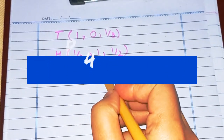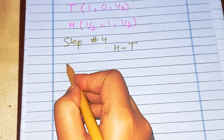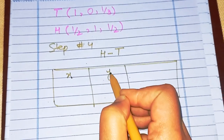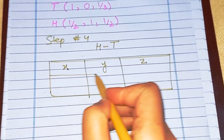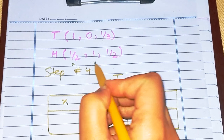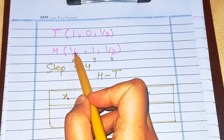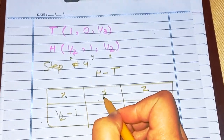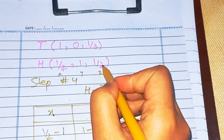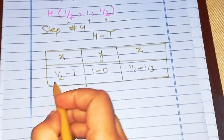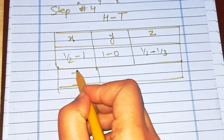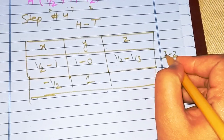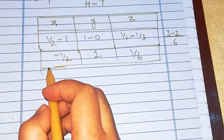Step four is to subtract the tail coordinates from the head coordinates — that is, head minus tail. For x: one-half minus one. For y: one minus zero. For z: one-half minus one-third. Calculating these: x gives minus one-half, y gives one, and for z we find the LCM of 2 and 3 giving three-sixths minus two-sixths, which equals one-sixth.